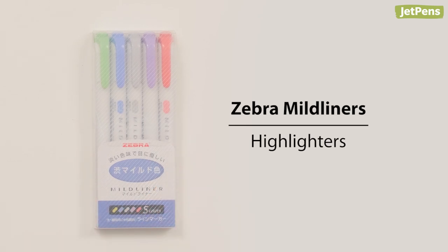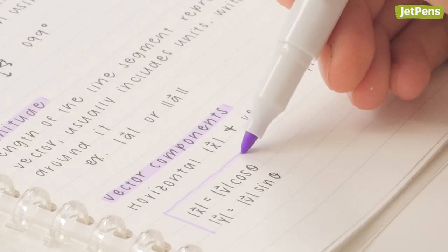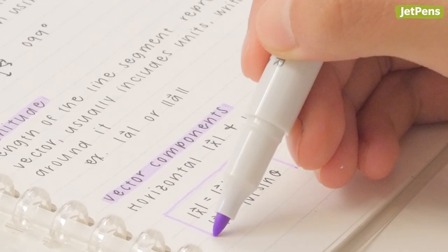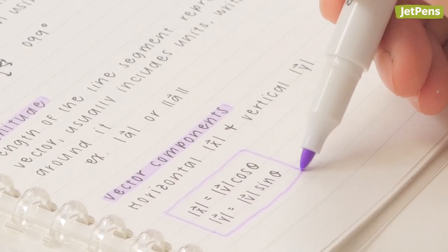Highlighters are essential for note-taking and organization. My favorite highlighters are the Zebra Mildliners in the Cool and Refined color set. These pastel colors are less distracting than traditional neon highlighters and make studying just a bit more fun. I also use the thin marker tip for underlining and drawing boxes to emphasize important facts and formulas in notes.